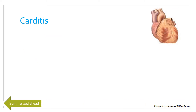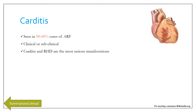Carditis is seen in around 50 to 60% of cases of acute rheumatic fever, making it the next most common clinical criterion. It can be clinical — where the patient is symptomatic with a murmur — or subclinical, where there are no symptoms or signs but echocardiographic features are present. Carditis and rheumatic heart disease are the most serious manifestations of rheumatic fever.